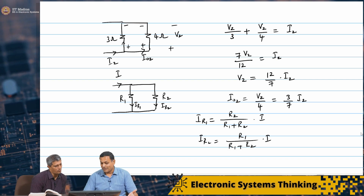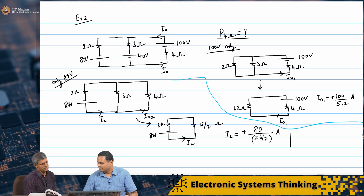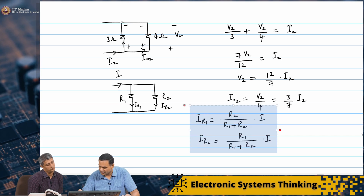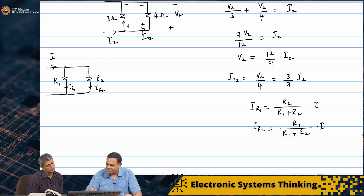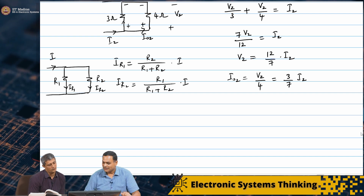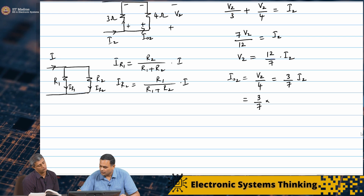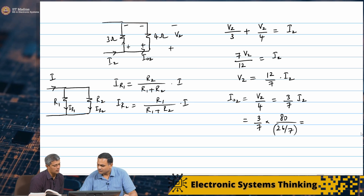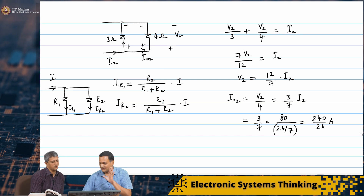Getting back to our problem: I₂ was 80 × 7/26 amperes. So I₀₂ = (3/7) × I₂ — the 7s cancel — giving I₀₂ = 240/26 amperes.